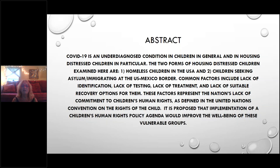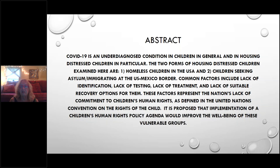COVID-19 is an underdiagnosed condition in children, especially those who are in housing distress. The two types of housing distress I would like to talk about today are homeless children in the U.S. and those who are seeking refugee or asylum or immigrating and arriving at the U.S.-Mexico border. The lack of identification, testing, treatment, and suitable recovery options exist for children in general, but especially for those in housing distress. These factors together represent our nation's lack of commitment to children's human rights as defined in the United Nations Convention on the Rights of the Child. I propose that implementation of a human children's rights policy agenda would improve the well-being of these very vulnerable children.